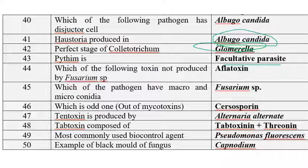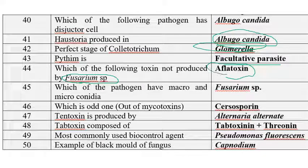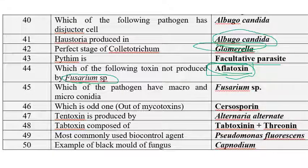Which of the following toxins is not produced by Fusarium? Fusarium produces fusaric acid, deoxynivalenol, and trichothecins. Aflatoxins are produced by Aspergillus species — so aflatoxins are not produced by Fusarium. The pathogen which produces macro and microconidia is Fusarium. Fusarium also produces chlamydospores — so microconidium, macroconidium, and chlamydospores are all produced by Fusarium species.